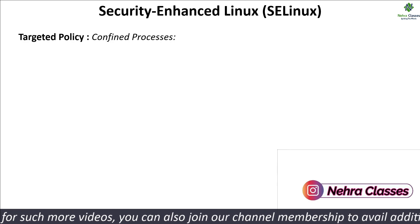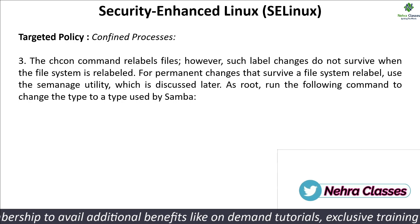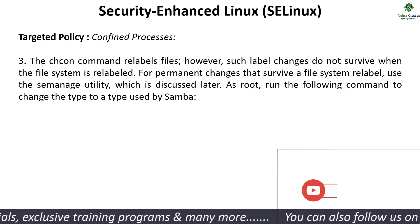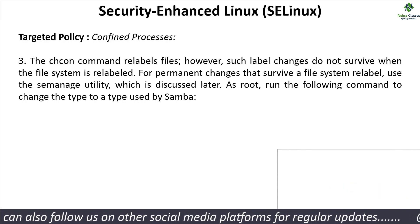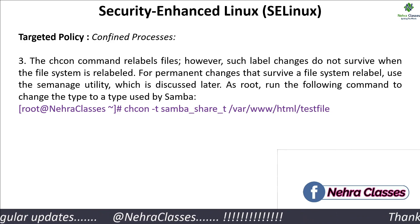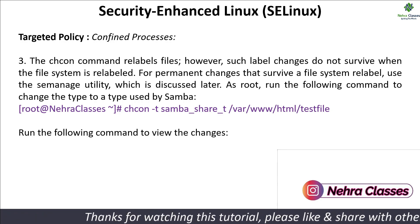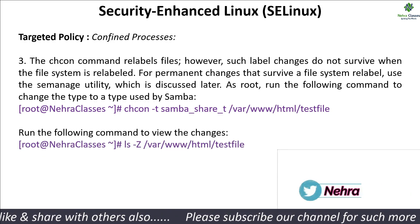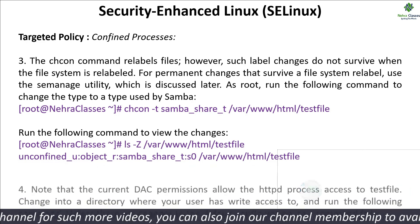Next, we change the context of the file. The chcon command relabels the file; however, such label changes do not survive when the system is relabeled. For permanent changes that survive a filesystem relabel, use the semanage utility, which will be explained later. As root, we execute chcon -t samba_share_t /var/www/html/testfile, changing the type to one used by Samba. We then verify the change by running ls -Z on the file again, and it now shows the label as samba_share_t.